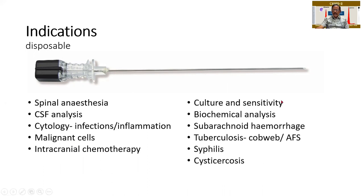Microbiology — the material is needed for culture and sensitivity. That is why the CSF should be collected in three different containers and sent to the concerned departments. Biochemical analysis — the sugar, the chloride, etc., all need to be analyzed. Sometimes to rule out a subarachnoid hemorrhage — the moment you put in a needle, you get blood, meaning the patient is having a hemorrhage. And of course, specific conditions such as tuberculosis, where we can get cobweb formation in the CSF, confirmed by acid-fast staining.